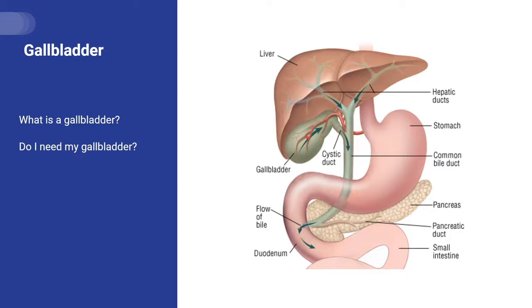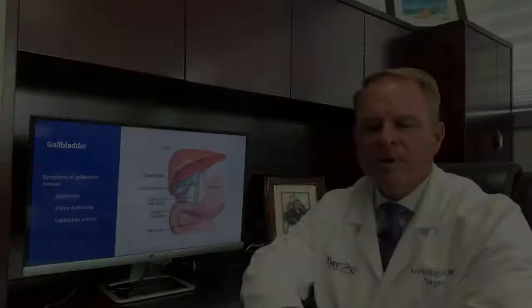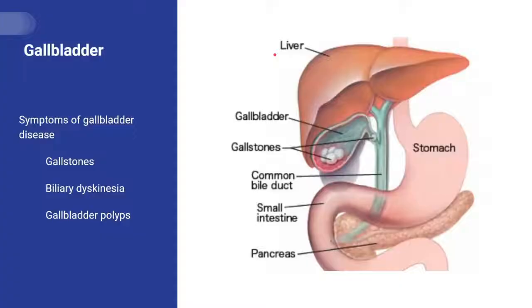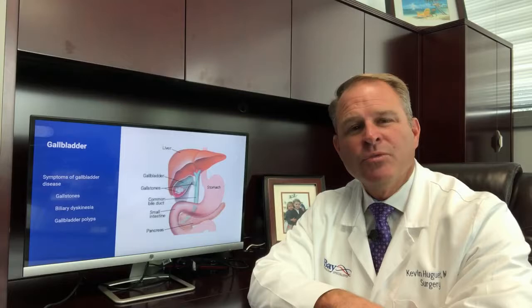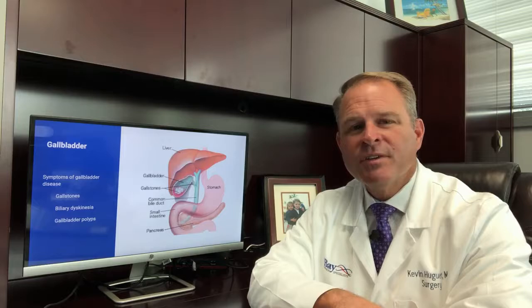If you remove a gallbladder, patients usually do not have any long-term consequences. The bile ducts typically will slightly enlarge to accommodate the lack of a gallbladder. Gallstones are typically small stones that form inside the lumen of the gallbladder. When gallstones are present, they stop the gallbladder from emptying correctly, and that causes pain. The typical symptoms include right upper quadrant pain, sometimes in the mid upper abdomen, typically after eating fatty or large meals.